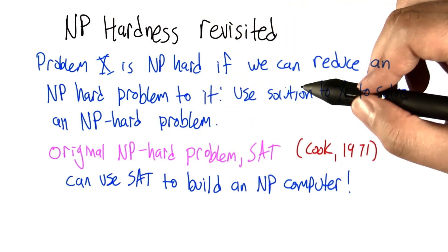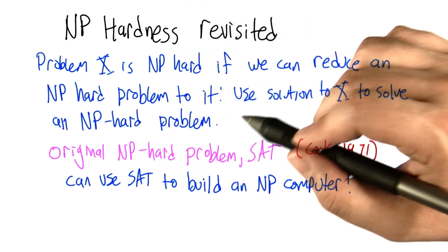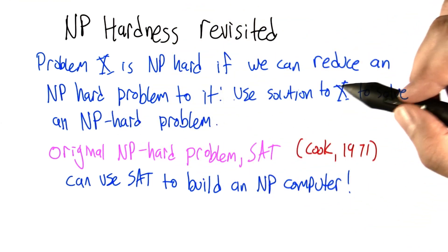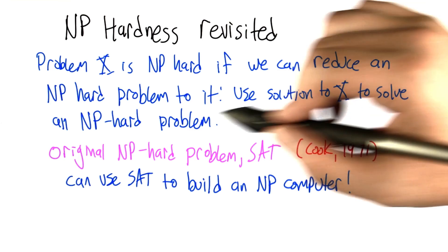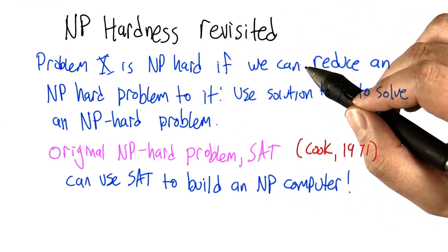What that really means is we can use a solution to problem X to solve some NP-hard problem. That means that solving X has to be at least as hard as the NP-hard problem, making it therefore NP-hard.